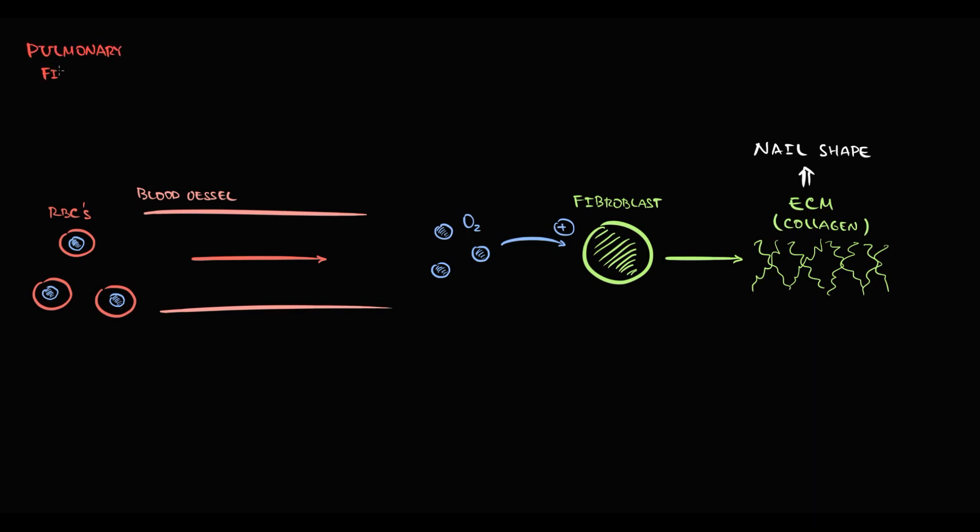In interstitial lung disease, for example pulmonary fibrosis, we have less space for oxygen exchange. As a result, the influx of oxygen to the blood decreases, and thereby the concentration of oxygen in the blood decreases.